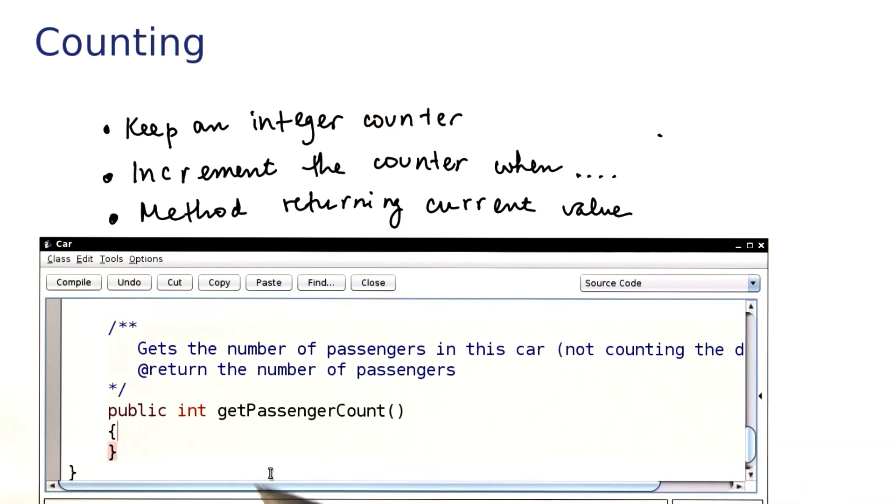Finally, the getPassengerCount really is as simple as you'd think. Here we just return the number of passengers.